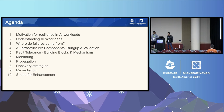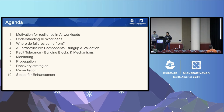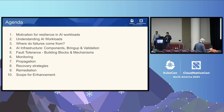In this talk, we'll go over the motivation for resiliency, understanding some of the characteristics of AI workloads, we'll see where failures come from, look into AI infrastructure components and bring-up and validation, then talk about fault tolerance and its building blocks — the four pillars: monitoring, propagation, recovery, and remediation. And we'll see where there's scope for enhancement as a community.